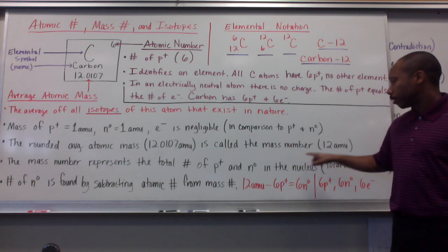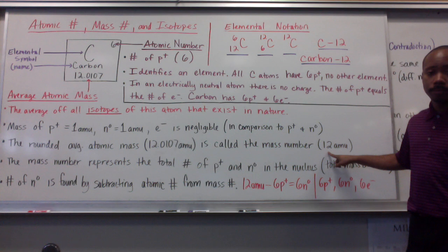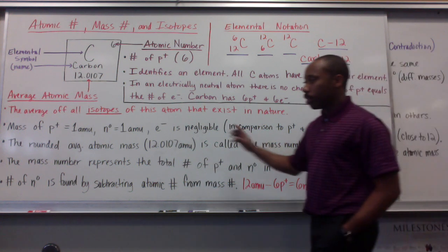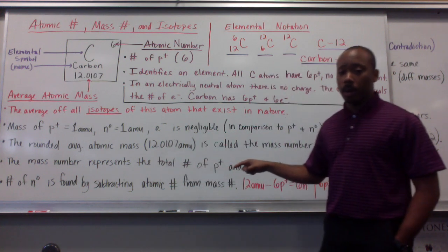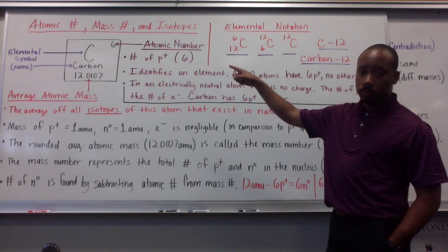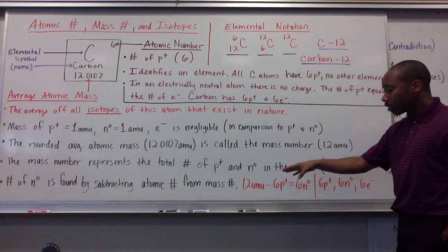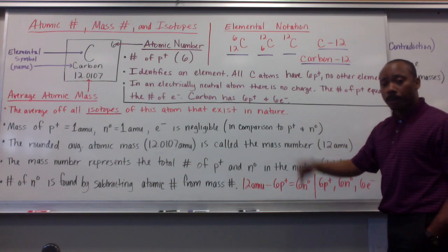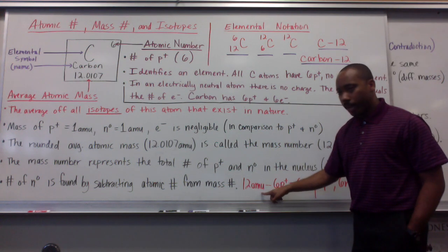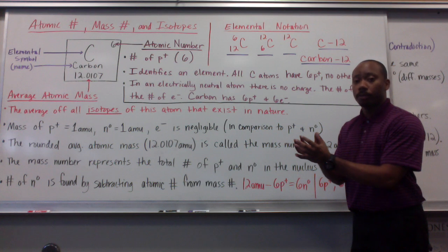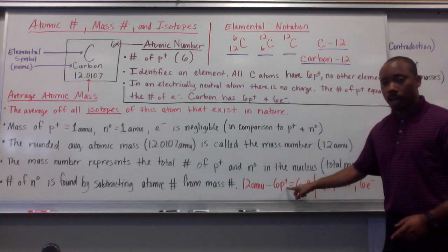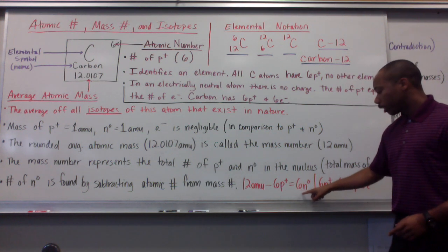In this case, carbon. Now, the number of neutrons is found by subtracting the atomic number from the mass number. So, in this case, for carbon, it would be 12 amu, which is the entire mass of the nucleus, the entire mass of the atom itself, minus 6 protons, equals 6 neutrons.